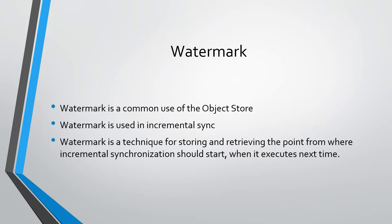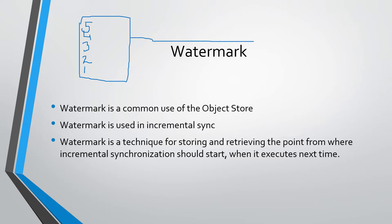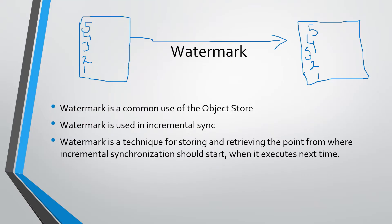For example, if we are synchronizing an object based on ID and currently we have IDs one, two, three, four, and five — in the first run it will move IDs one, two, three, four, five to the target system from the source system. In this case the maximum ID is five, so we store the number five.